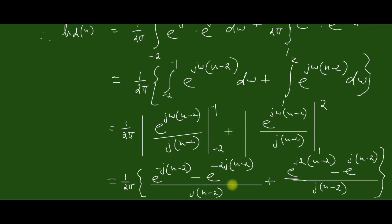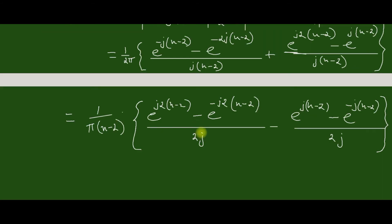Substituting the ranges, we get the expression in this pattern. We can rearrange these terms so that we get an expression of the form e^(jθ) minus e^(−jθ) over 2j, which equals sin(θ).